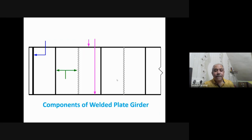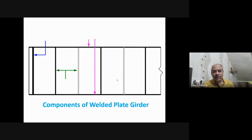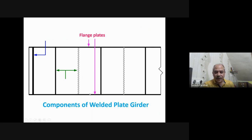We prefer plate girders when we have large bending moment. The main components of a welded plate girder are: first, the compression flange plate (top, under gravity loads) and the tension flange plate (bottom). Then we have the web plate, which runs throughout the span between the compression and tension flanges.